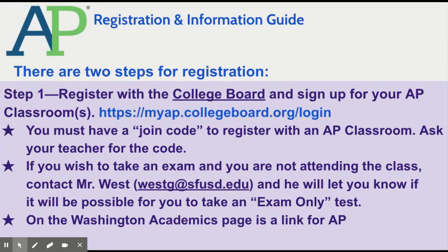The first thing you need to know if you are going to register for exams with George Washington High School as a student: there are two steps. First, you must join the classroom with your AP class. Your teacher should give you a join code. You log in to myapcollegeboard.org/login, and you should be able to join with the join code provided to you by your instructor.